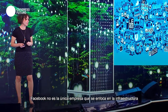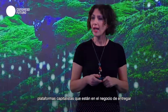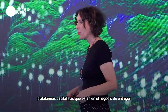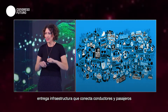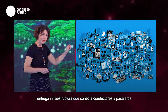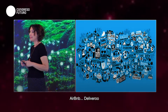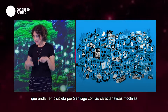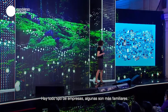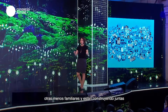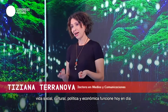Facebook is not the only one focusing on this question of infrastructure. There are all kinds of companies that critics have called platform capitalists, all in the business of providing logistical infrastructures. Companies such as Uber, which says it provides the infrastructure connecting people with spare time on their cars to people who want to go somewhere — they connect through the platform. Airbnb, Deliveroo — building these invisible infrastructures which allow our social, cultural, political, and economic life to function these days.